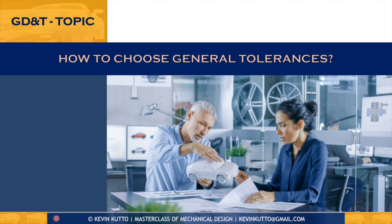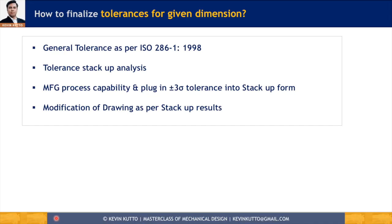Hello friends, hope you are doing good. A few days back I had made a video on the topic of how to select a tolerance value for given dimensions, and I had explained multiple steps in order to finalize the tolerance value. The first step of that process was selecting a general tolerance, and many of you asked: how to select a general tolerance for given dimensions? In this video we are going to answer that question.